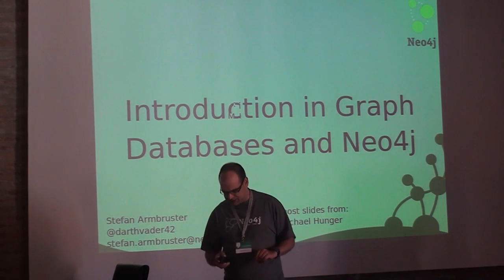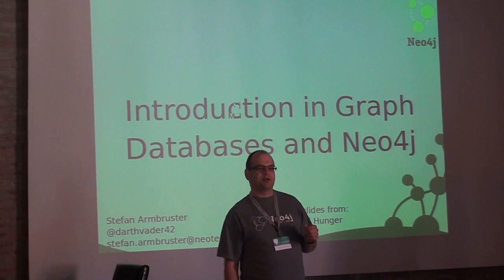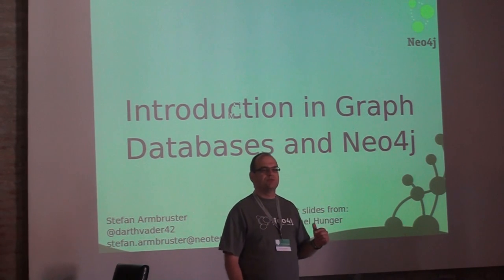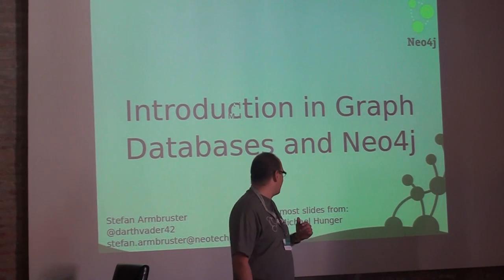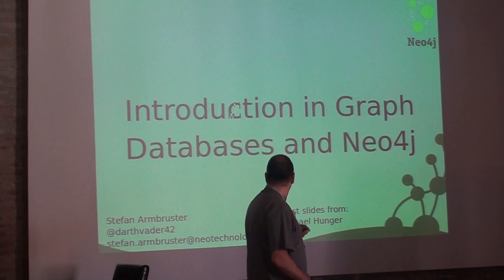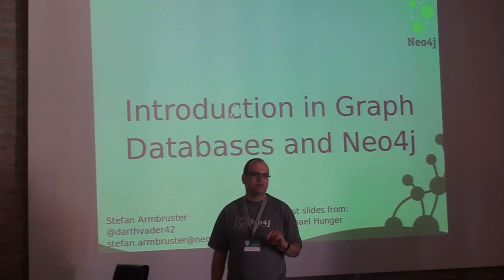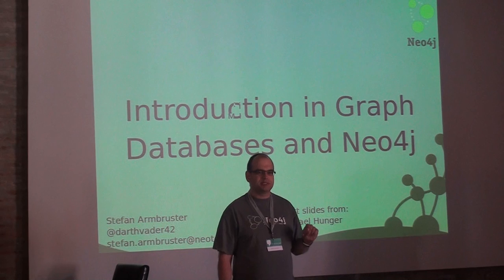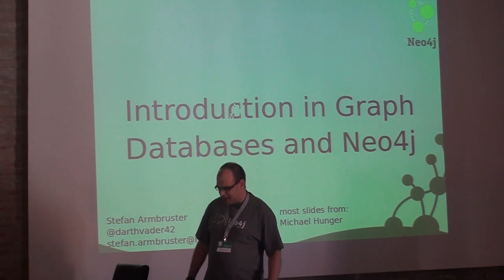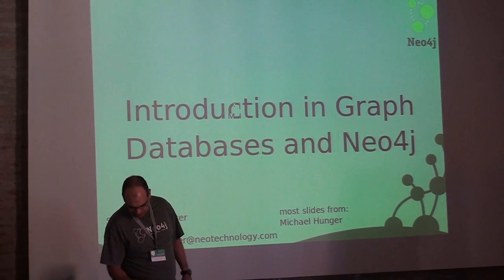First of all, I want to introduce myself. My name is Stefan Armbruster. I work for Neo Technology, which is the company that backs the open source development of Neo4j, the graph database implementation with by far the largest user base right now. Most of the slides are shamelessly stolen from my colleague Michael Hummer. I'm based in Munich, Germany, and when I'm not working on graph databases, I spend a lot of time in our local fire department as a firefighter — that's why you see this helmet on my head in the conference picture.